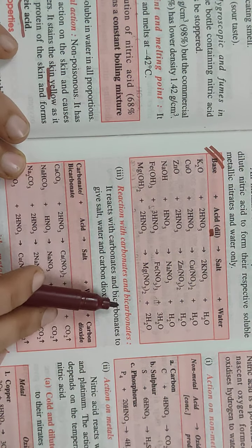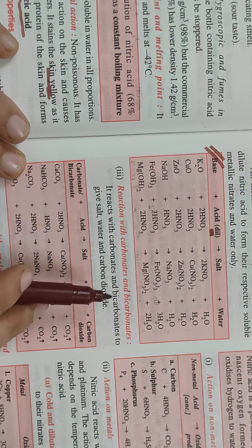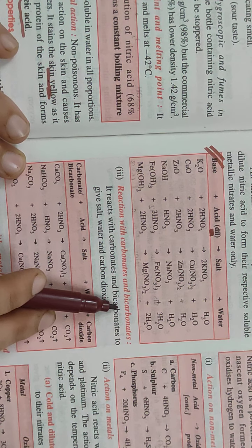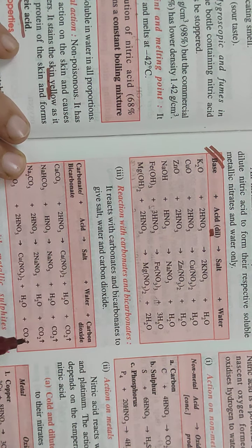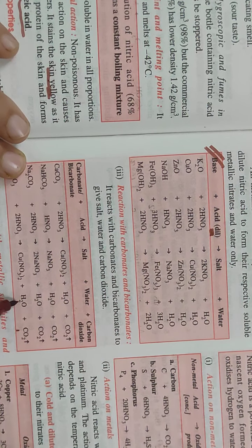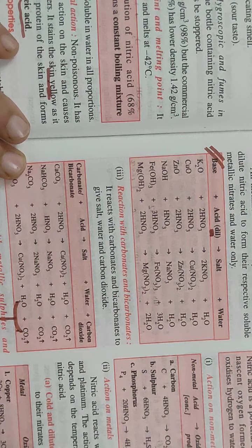When we combine with carbonates and bicarbonates, you must remember that whenever the reactant is a carbonate or bicarbonate, the sure products you will get are carbon dioxide and water. If you combine this carbon dioxide and water, you will get H2CO3.